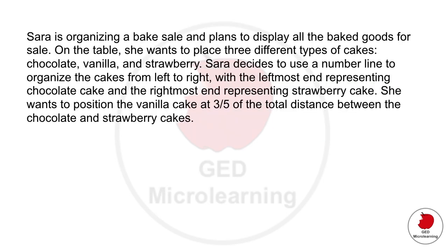Let's do a final problem. Sarah's organizing a bake sale and plans to display the baked goods on sale. So on the table, she wants to put 3 types of cakes, chocolate, vanilla, and strawberry. And she's going to use a number line to organize the cakes from left to right. The left-most is going to be chocolate, and the right-most is going to be strawberry. She wants to position the vanilla at 3 fifths of the total distance between the chocolate and strawberry.